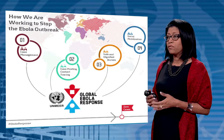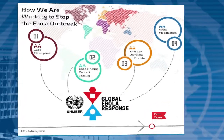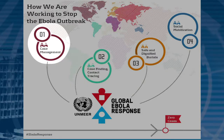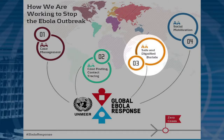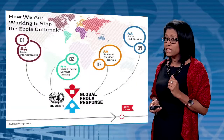Let me remind you of the four main pillars of Ebola outbreak response. Case management was pillar one. The next pillars are case finding and contact tracing, number two; safe and dignified burials, number three; and number four, which cuts across all of the other response pillars, is social mobilization and community engagement.